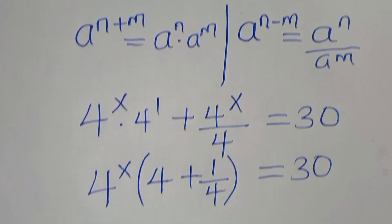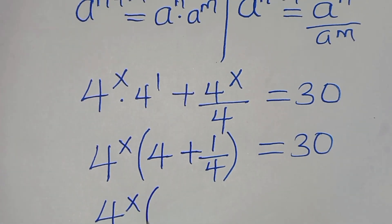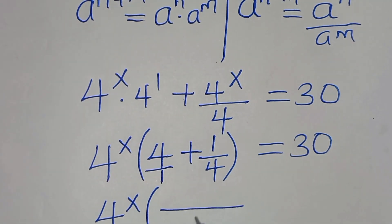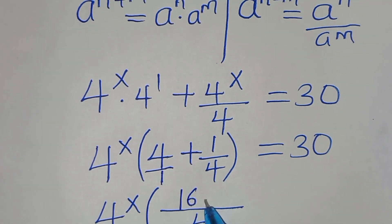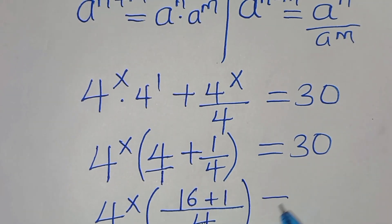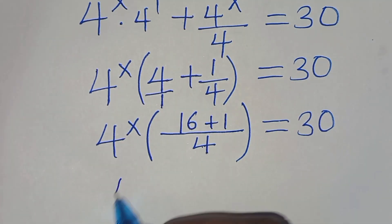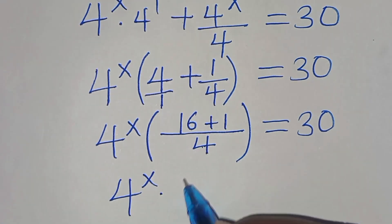The next step: inside the parentheses, 4 is a whole number over 1. The common denominator is 4, so 4 over 1 becomes 16 over 4, and 1 over 4 stays as 1 over 4. Adding gives us 17 over 4 inside the parentheses, equaling 30.